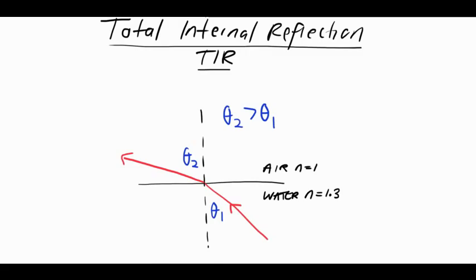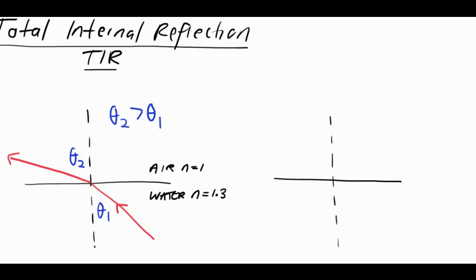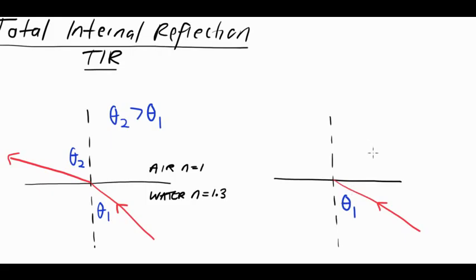Now I want you to imagine that we increase the angle of incidence to be bigger than before. In our second diagram, same boundary, we have our normal, and in this case we're making our angle of incidence bigger. As we increase the angle of incidence, the angle of refraction is going to become larger and larger, because what's happening is it's bending further and further away from the normal.